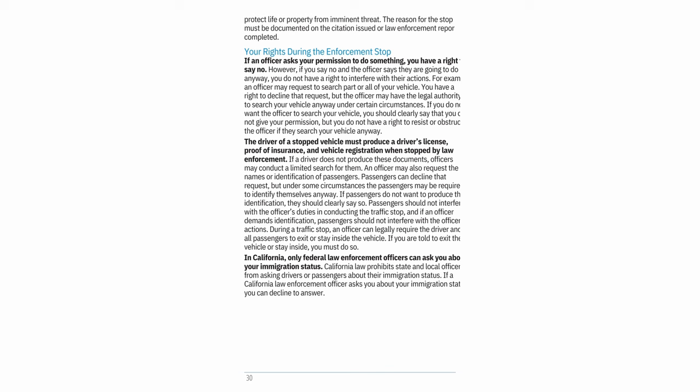The driver of a stopped vehicle must produce a driver's license, proof of insurance, and vehicle registration when stopped by law enforcement. If the driver does not produce these documents, officers may conduct a limited search for them. An officer may also request the names or identification of passengers — passengers can decline, but under some circumstances may be required to identify themselves. Passengers should not interfere with the officer's duties in conducting the traffic stop.